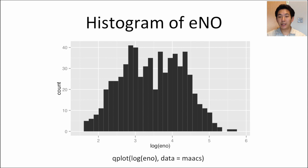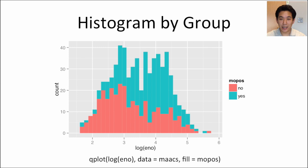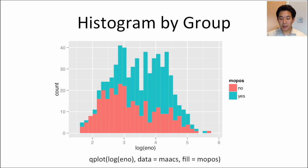Here's a basic histogram of exhaled nitric oxide — specifically the log of ENO — which has an interesting shape with what looks like two or even three peaks across the histogram. When color-coded by the mouse-positive variable, separating children sensitized to mouse allergen from those not sensitized, you can see the blue bars are slightly higher and the red bars tend to be slightly lower — suggesting that mouse-positive children have slightly higher pulmonary inflammation on average.